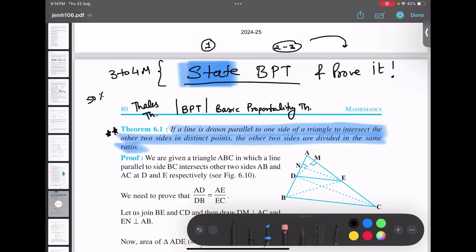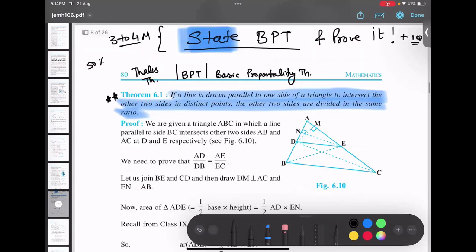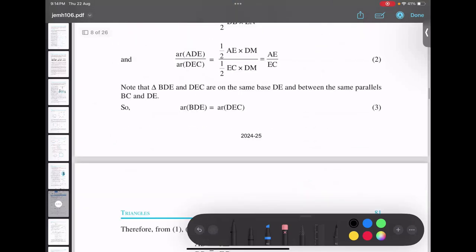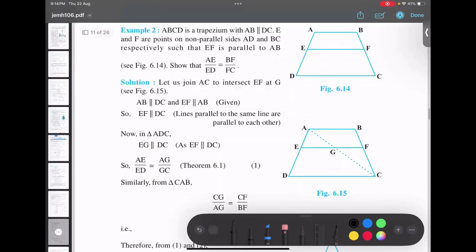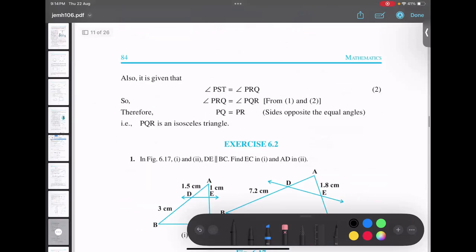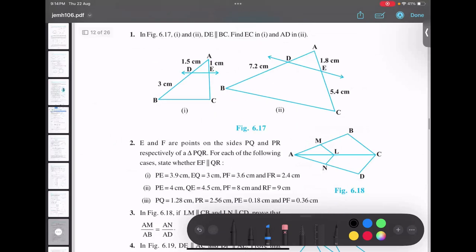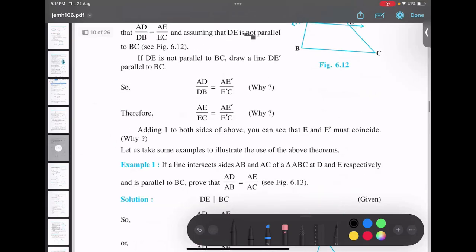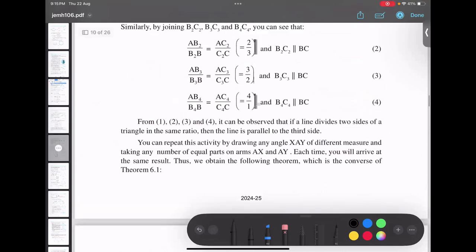After that, they can add one more question to it. Then this question will become four to five marks. They write state BPT, prove it and solve this. From the exercise or example, they will give one question to prove. It's a very standard practice. I personally remember when I was giving my 2005 board exam, the same question came.